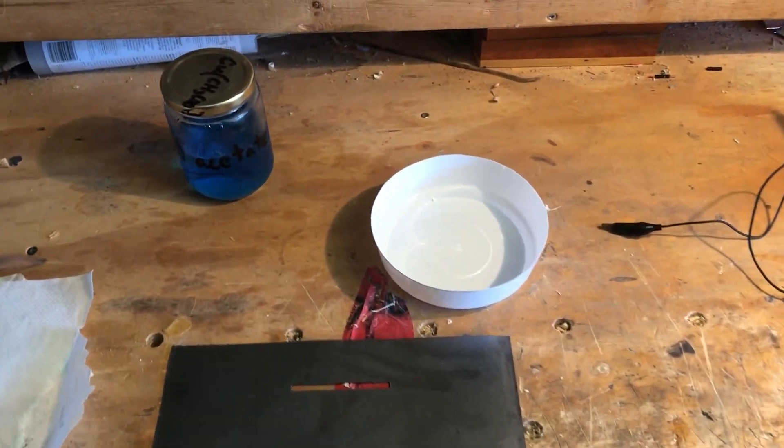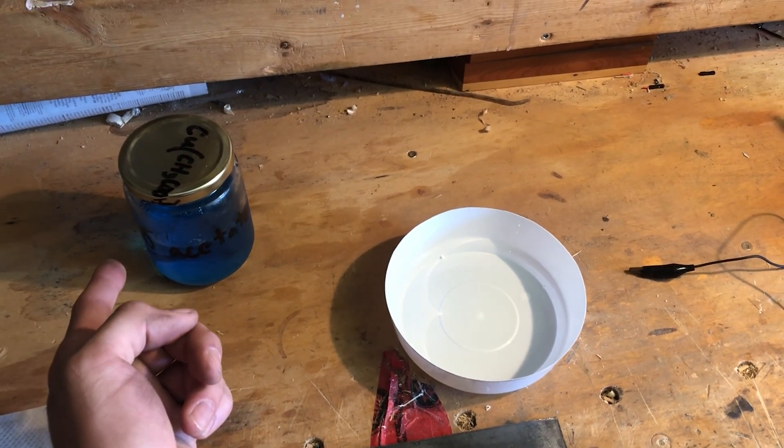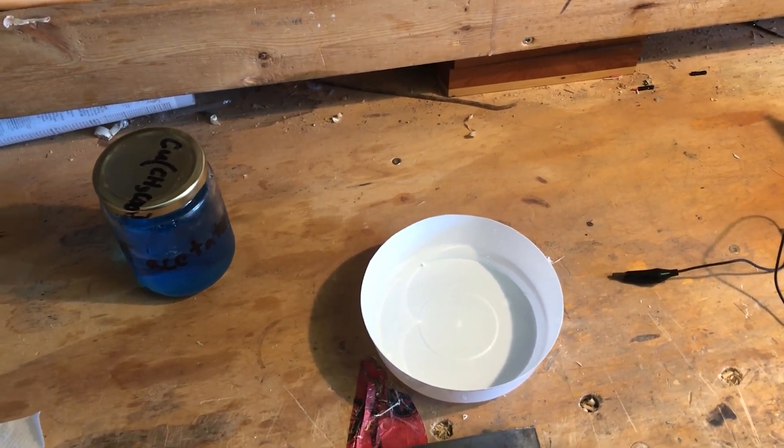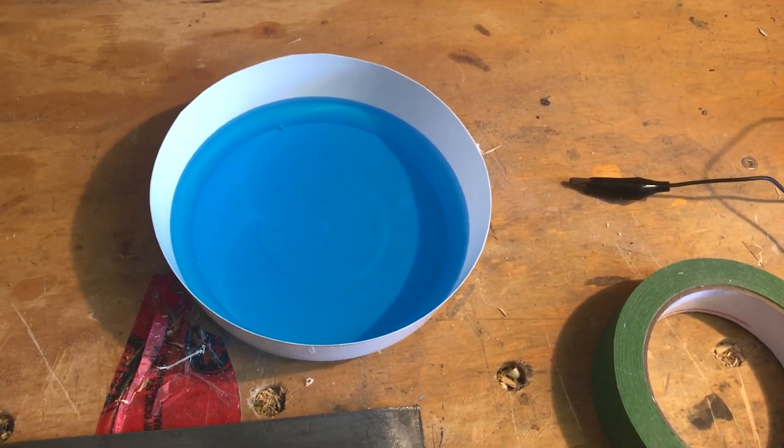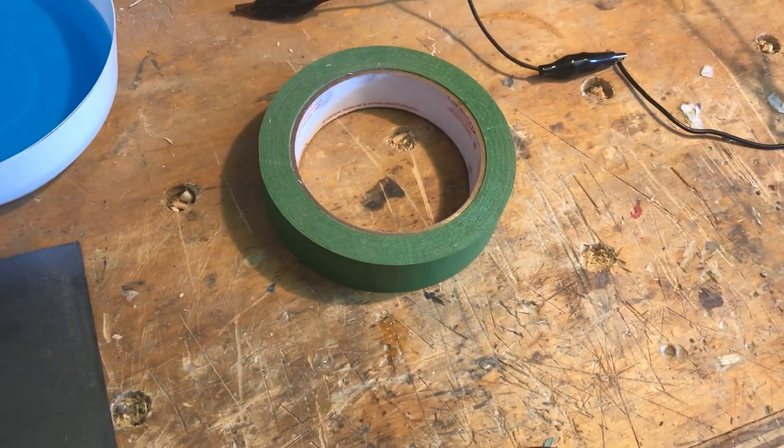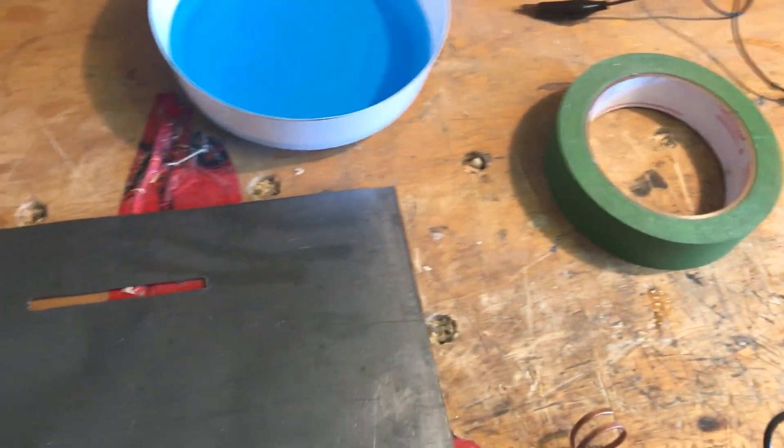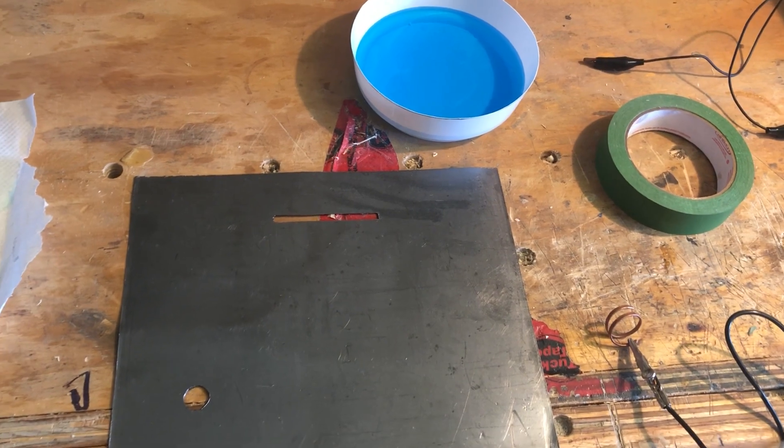First step is we're just going to pour some copper acetate into our container. Now that our container is full, I'm just going to use some masking tape and mask off any places that I don't want to be copper plated on this sheet.